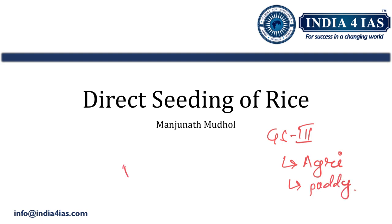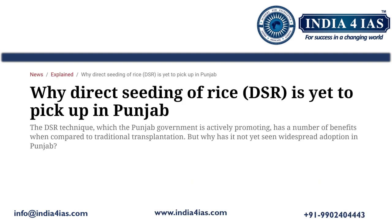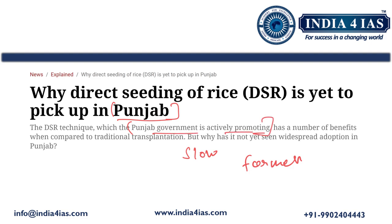The topic is important for both prelims and mains. The direct seeding of rice was in focus because the pace of adoption of direct seeding of rice in Punjab is very slow. Even though the Punjab government is actively promoting this technique, its adoption among the farmers remains very slow.